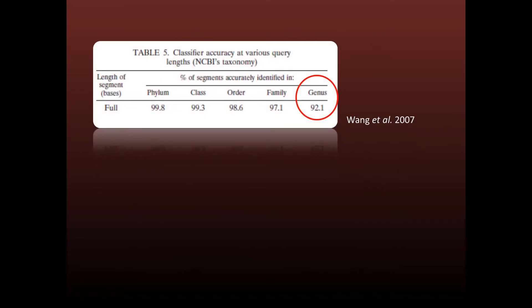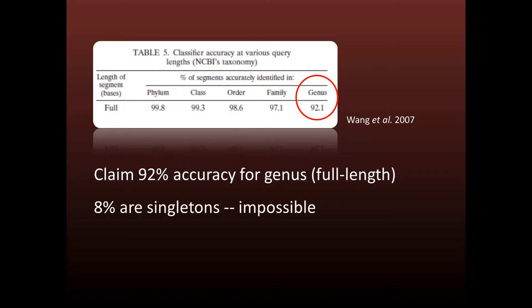Using this method, the RDP authors claim an accuracy of around 92% for assigning genus to full length sequences. However, what they're really measuring here is the number of singleton genera in the reference. If the genus has only one reference sequence, then there are none left after it's extracted and it's impossible to predict the genus correctly.